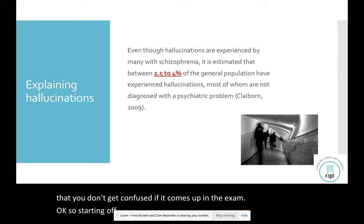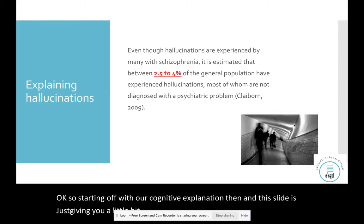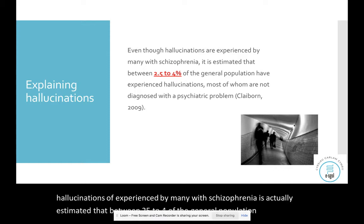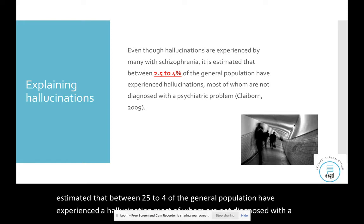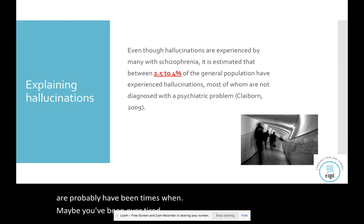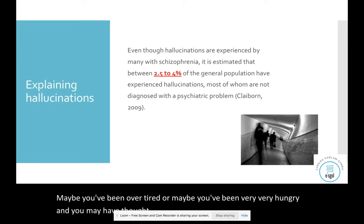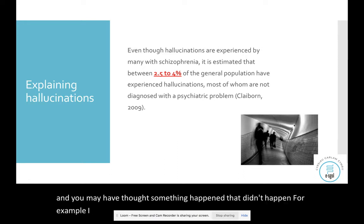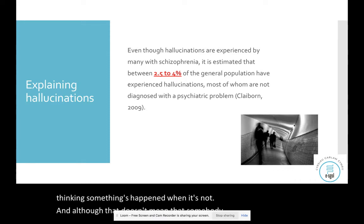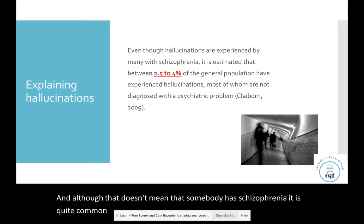Starting with our cognitive explanation, it's estimated that between 2.5 to 4 percent of the general population have experienced a hallucination, most of whom are not diagnosed with a psychiatric problem. You may have had times when you were overtired or very hungry and thought something happened that actually didn't — for example, feeling as though your phone has vibrated in your pocket when it hasn't. That's a hallucination — thinking something's happened when it's not — and although that doesn't mean somebody has schizophrenia, it is quite common.